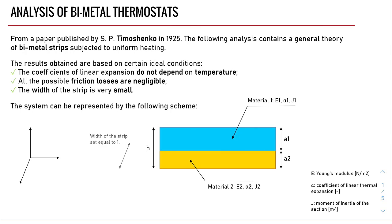This is the scheme of the system. We have the strip here that has a rectangular cross-section and a height h, and it's composed by two layers, layer 1 and layer 2. Each layer has respectively a height a1 and a2.